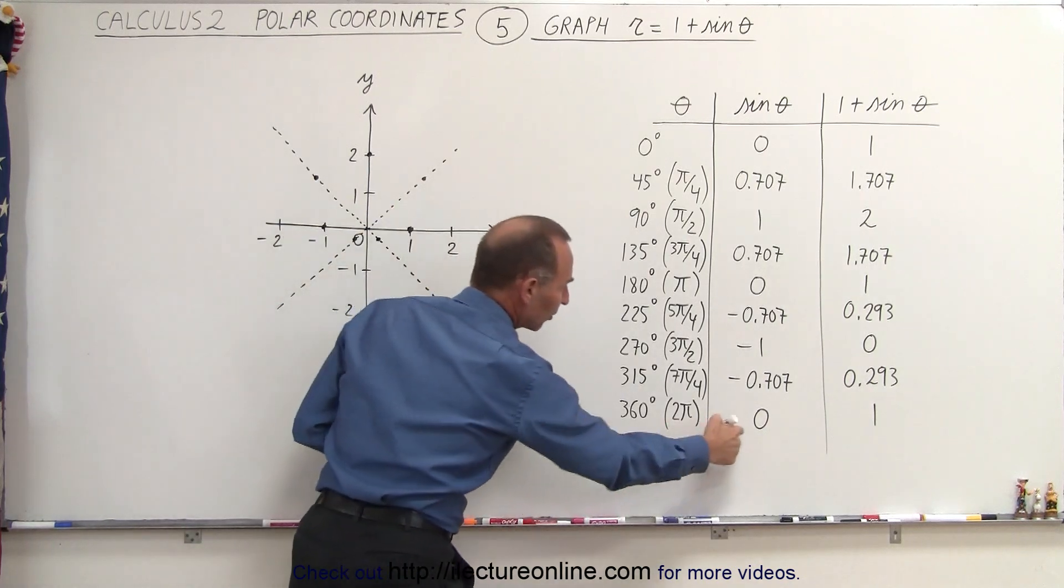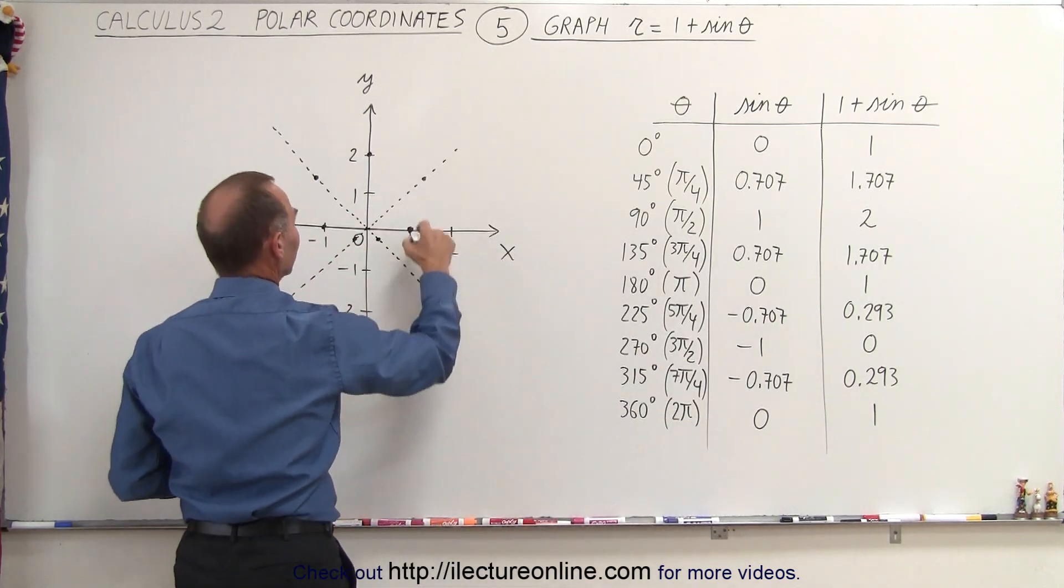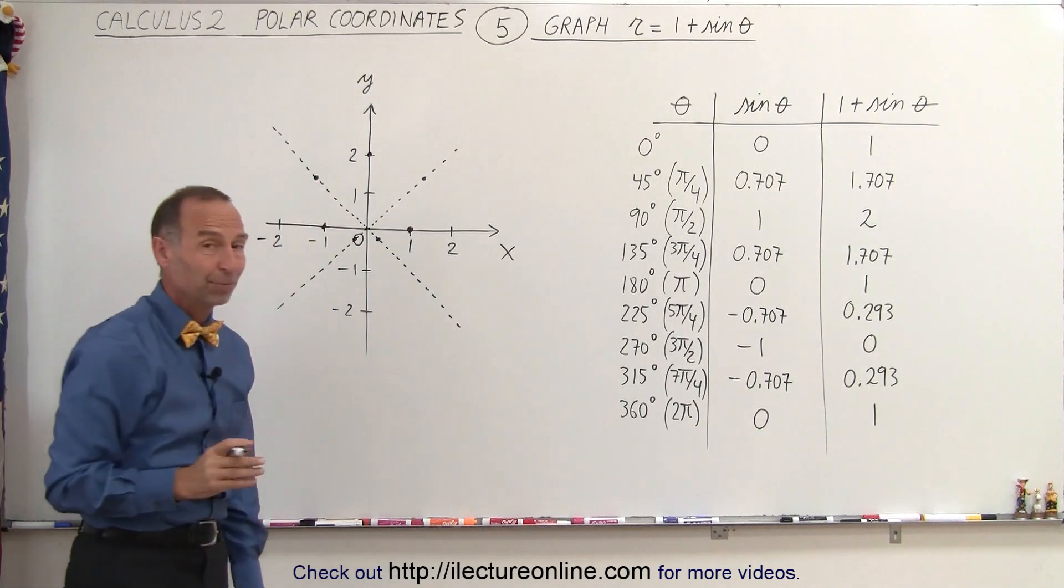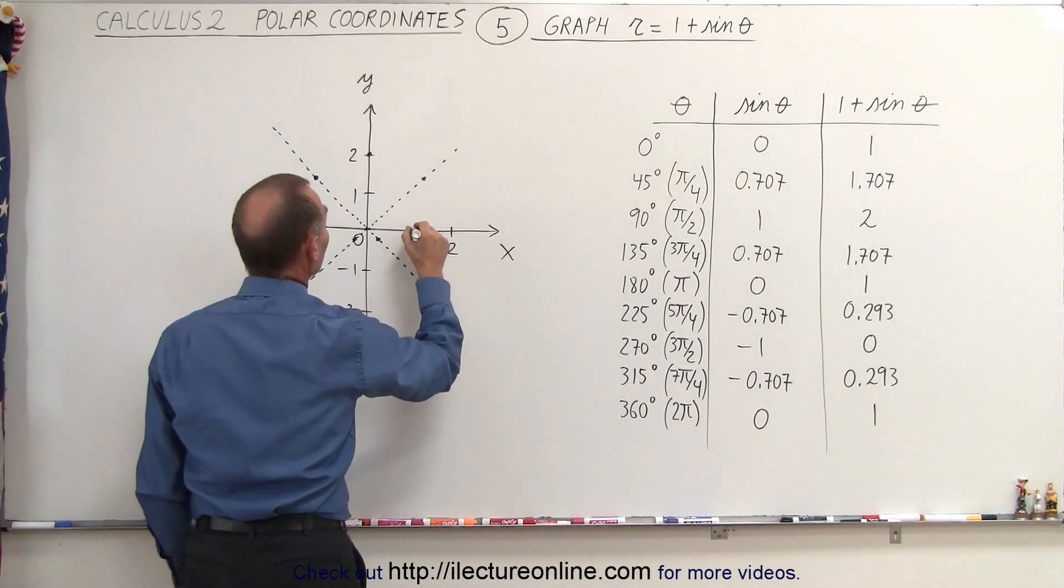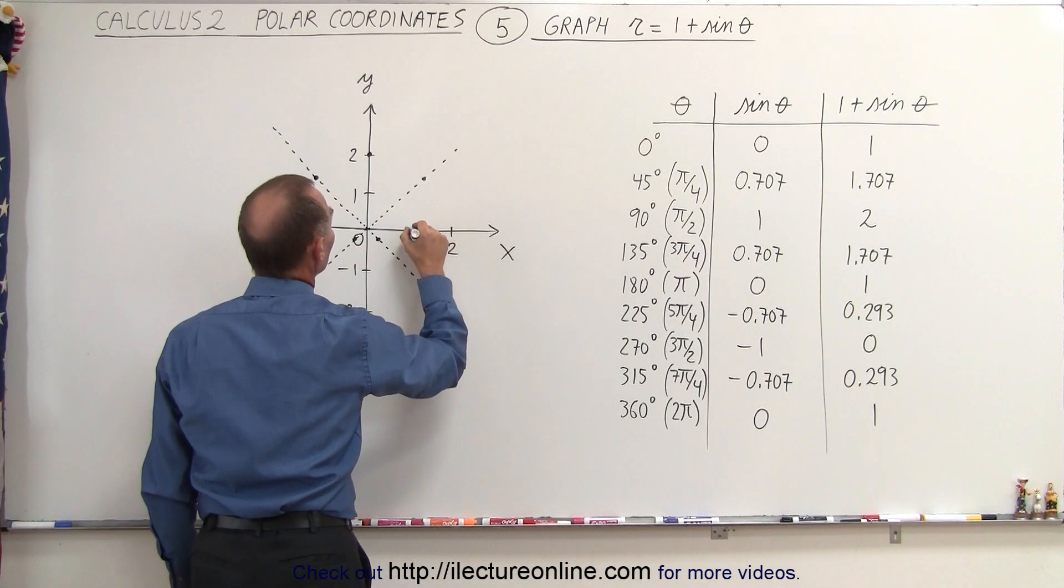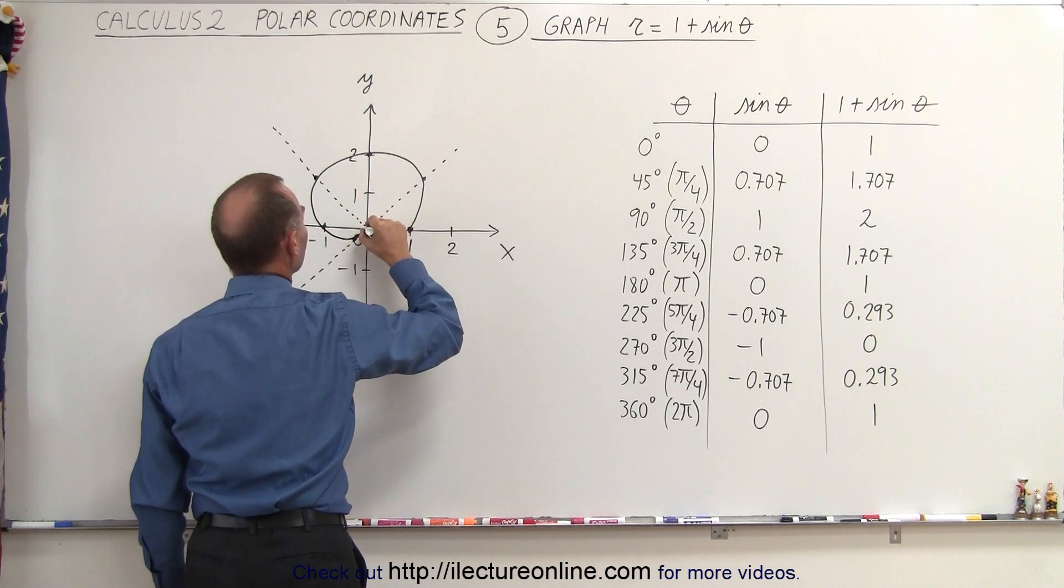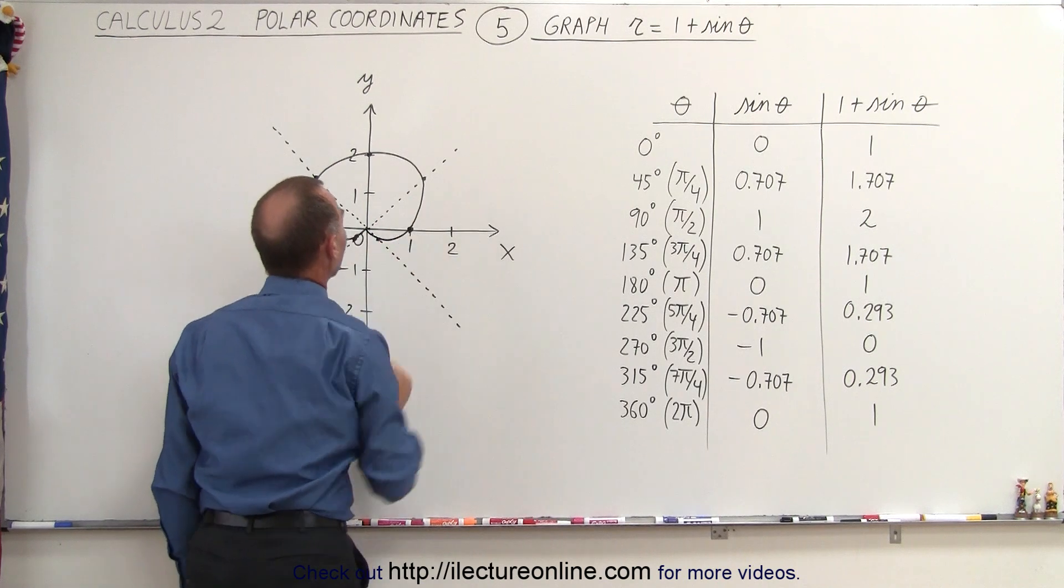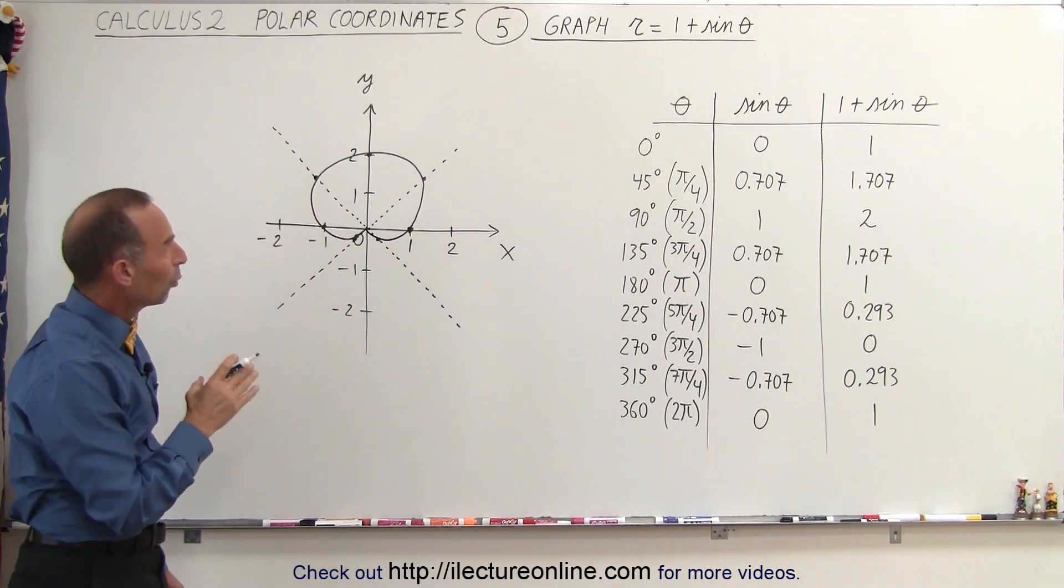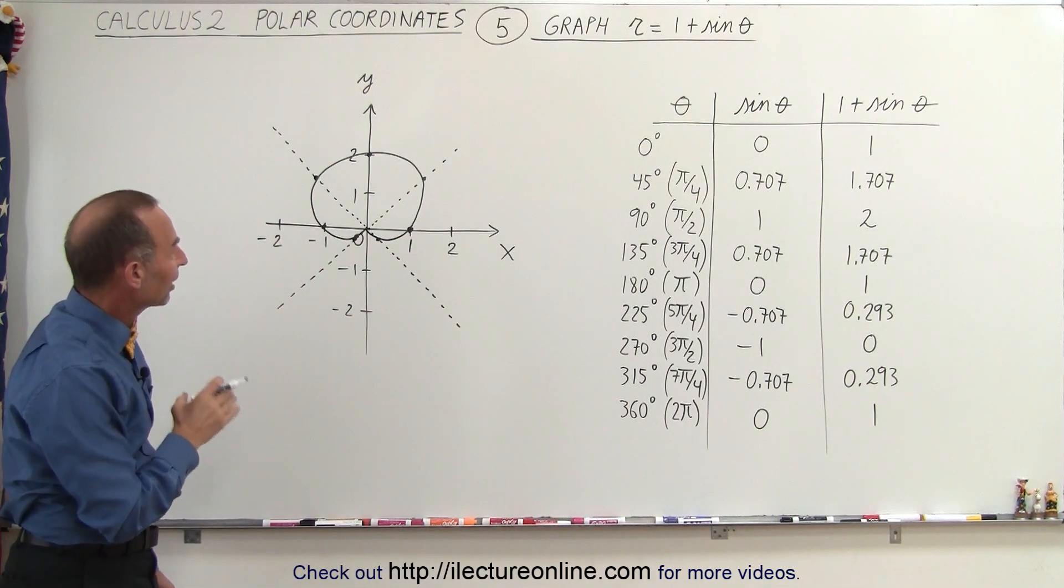Finally, at 360 degrees all the way around, the function is back to this point. When we connect all those dots, we end up with something that looks like this—to the origin, then back. That's what the function r equals 1 plus sine of theta looks like.